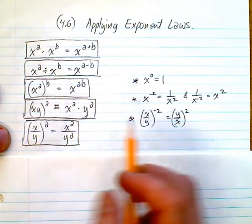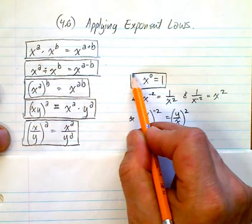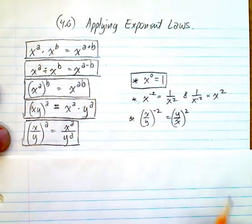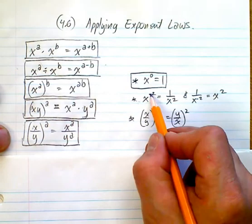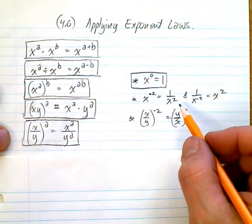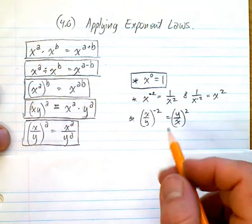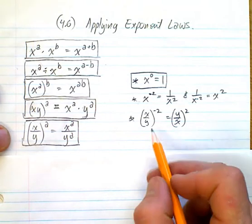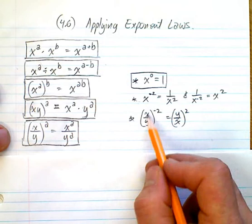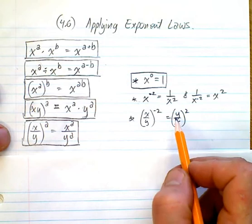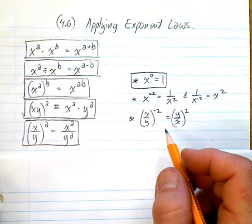Similarly, if you've got a fraction to a power, you can apply that power to both the top and the bottom. Here are a couple of very important points: anything to the power of zero is one. We just dealt with negative exponents, and this is another example of negative exponents where you just find the reciprocal. So all this stuff should be somewhat fresh in your brain.